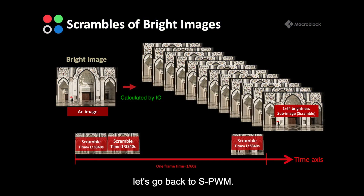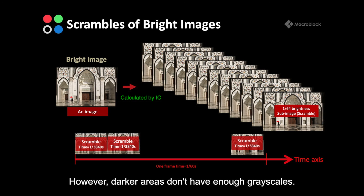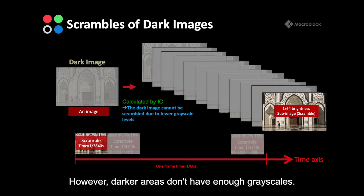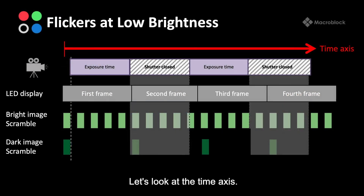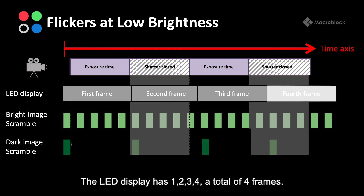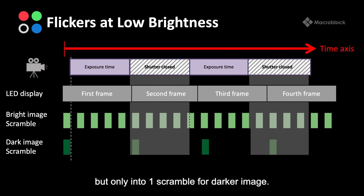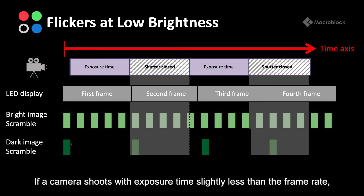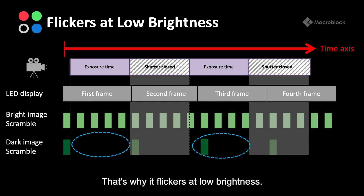To solve the problem, let's go back to SPWM. The IC can easily break up the bright part of the image into 64 scrambles. However, darker areas don't have enough grayscale levels — sometimes there can only be one scramble. If a camera shoots with exposure time slightly less than the frame rate, sometimes it will capture the darker scramble and other times it won't. That's why it flickers at low brightness.